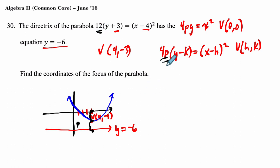4p equals 12. So, if we set that up, say 4p is 12, divide both sides by 4, and p is 3. So, the distance between the directrix and the vertex is 3. So, the distance between the vertex and go up 3 is our focus.